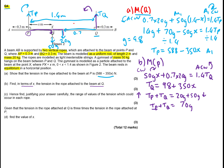Now part c: justify carefully the range of values of tension which could occur in each rope. We know x can be between 0 and 1.4. Since x lies between these values, you substitute both endpoints into your expressions for Tp and Tq — set x equals 0 and x equals 1.4.